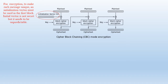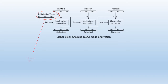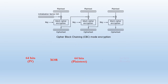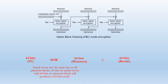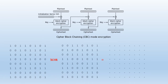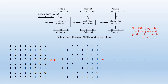The initialization vector is not secret, but it needs to be unpredictable. The initialization vector has the same size as all plain text blocks. For example, 64 bits of initialization vector with 64 bits of plain text block will produce a 64-bit result. The XOR operation compares and produces the result bit by bit.